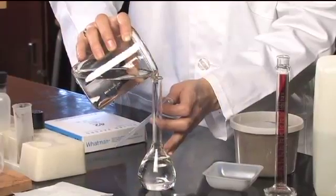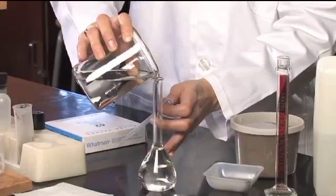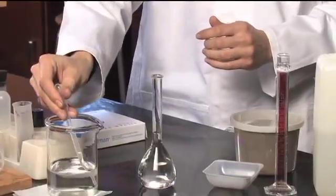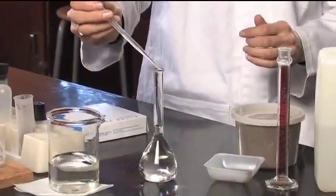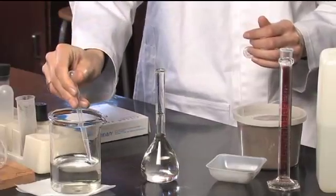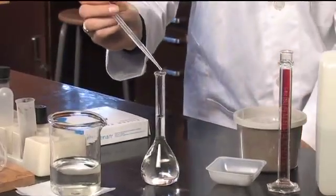So we'll take it up fairly close to the line and we'll stop just short and use the dropper to finish getting it so that the meniscus is exactly at the line. So the bottom of the meniscus hits the line.